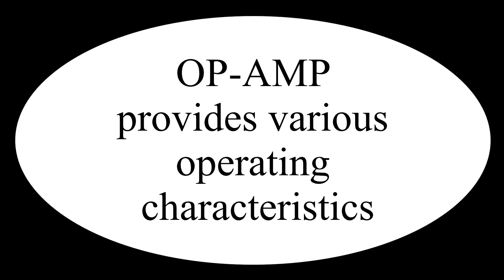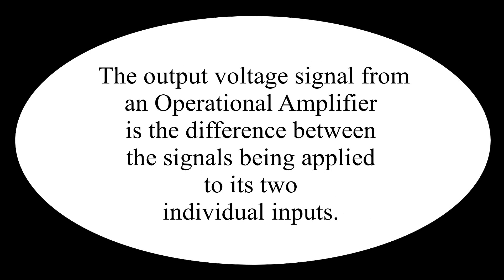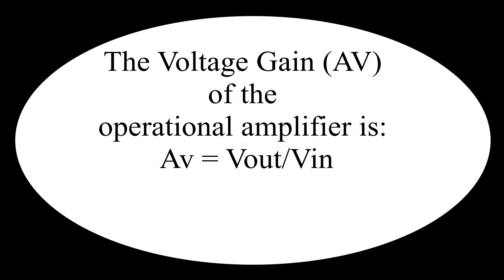The op amp can be connected in a large number of circuits to provide various operating characteristics. The output voltage signal from an operational amplifier is the difference between the signals applied to its two individual inputs — in other words, the op amp output signal is the difference between the two input signals. As the input stage of an operational amplifier is in fact a differential amplifier, the voltage gain Av can be found using the formula: Av = Vout / Vin.